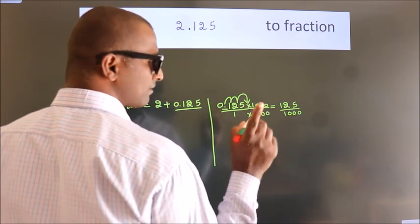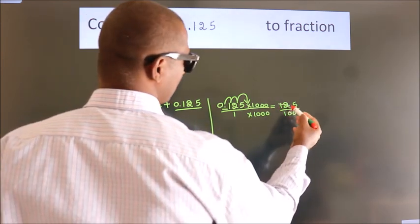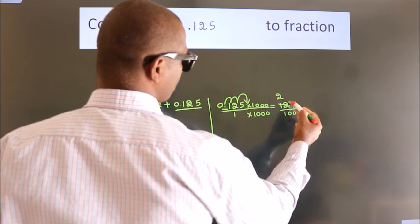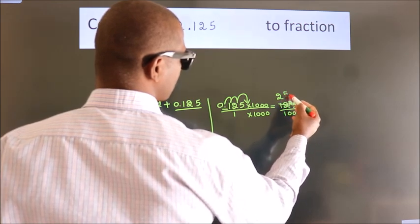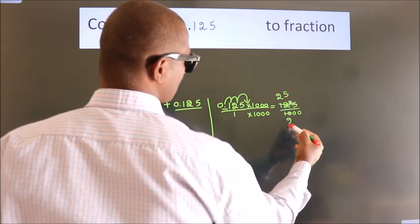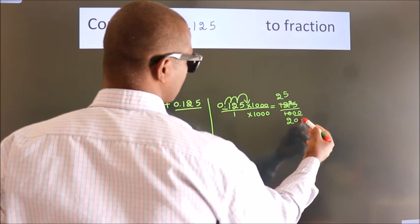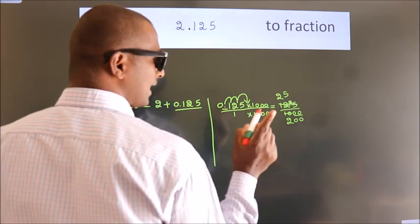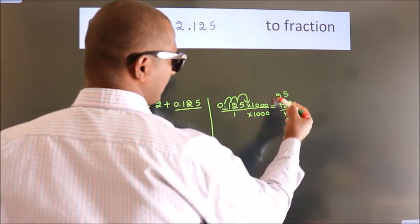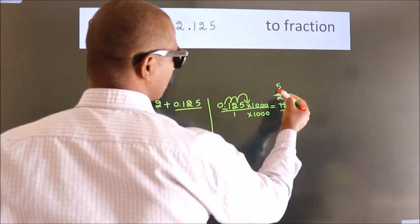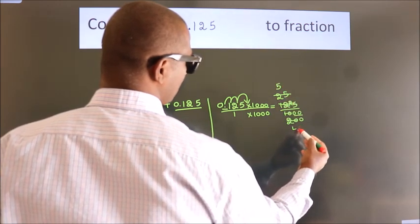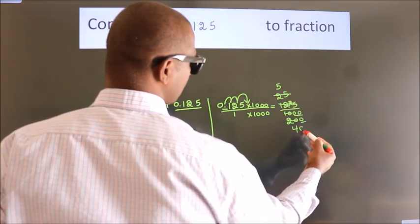Now I cancel with 5. 5 twos, 5 fives, 5 twos. These zeros as it is down. I cancel with 5 again. 5 fives, 5 fours. This zero as it is down.